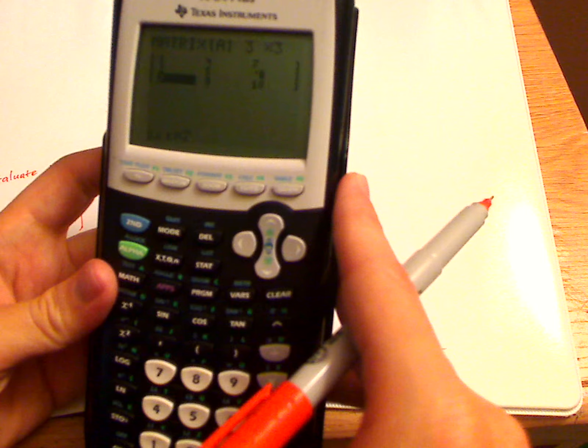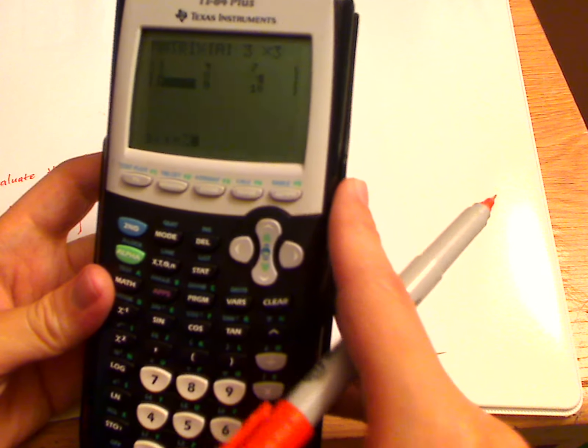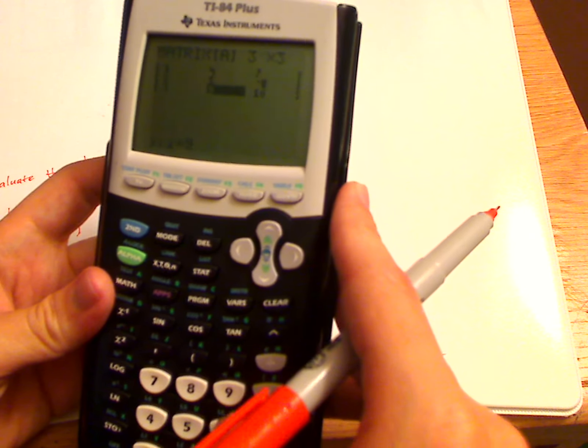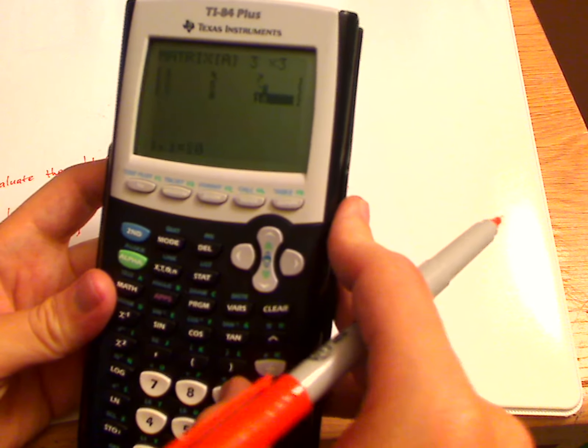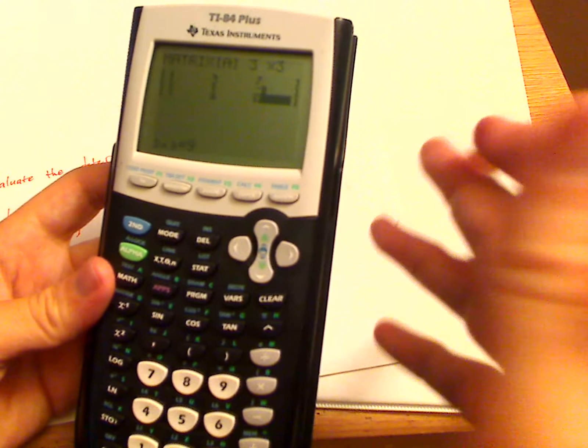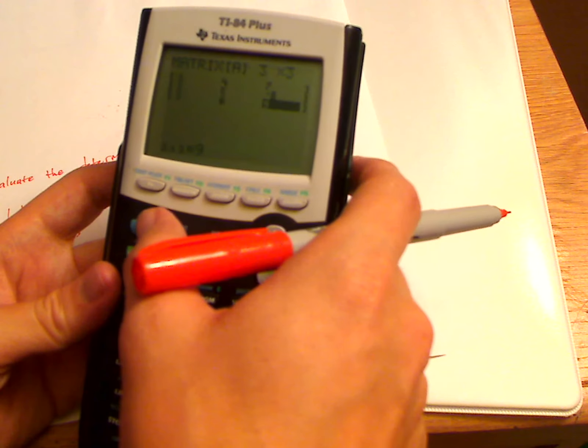That's pretty much it. Now what you want to do is quit. So quit—now you're at the regular screen. Go back to matrices—second, x to the negative one.